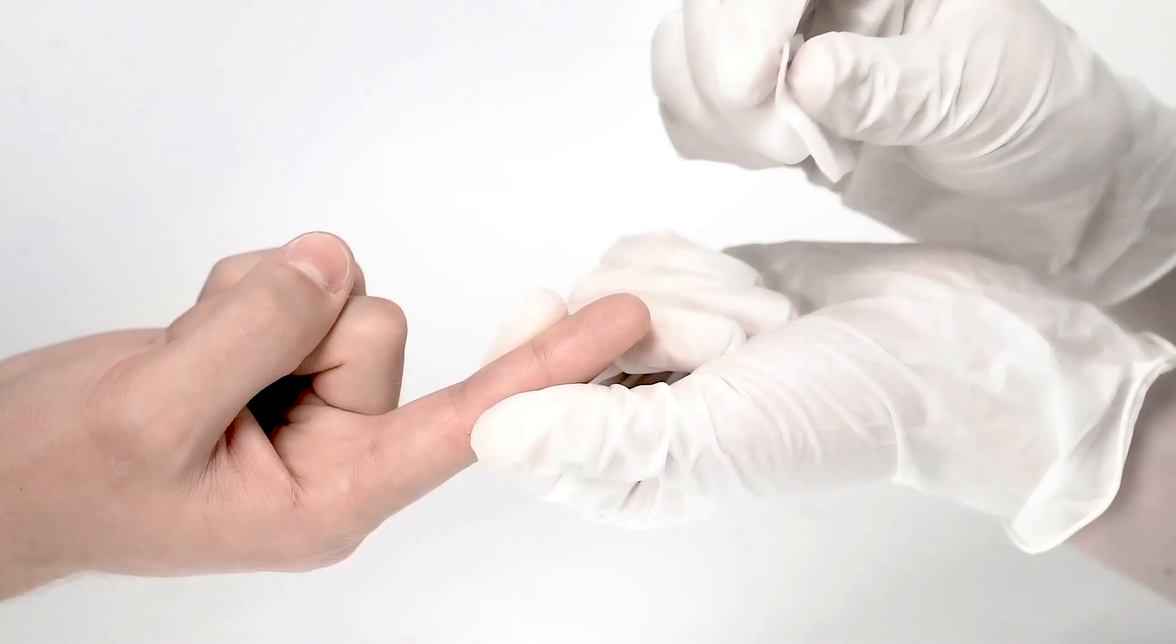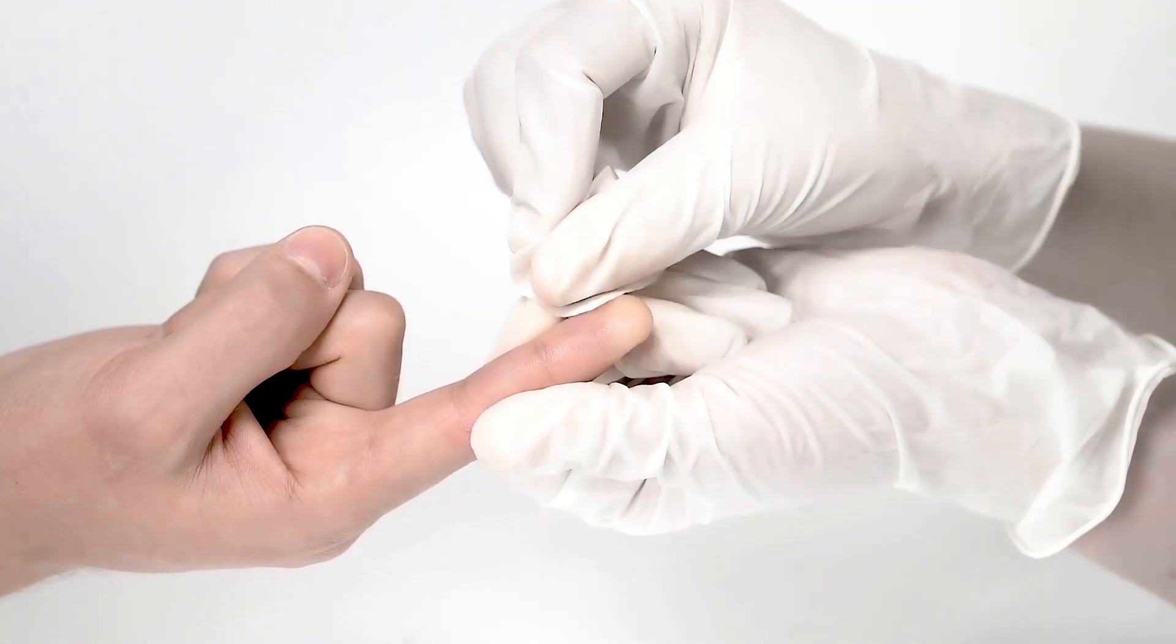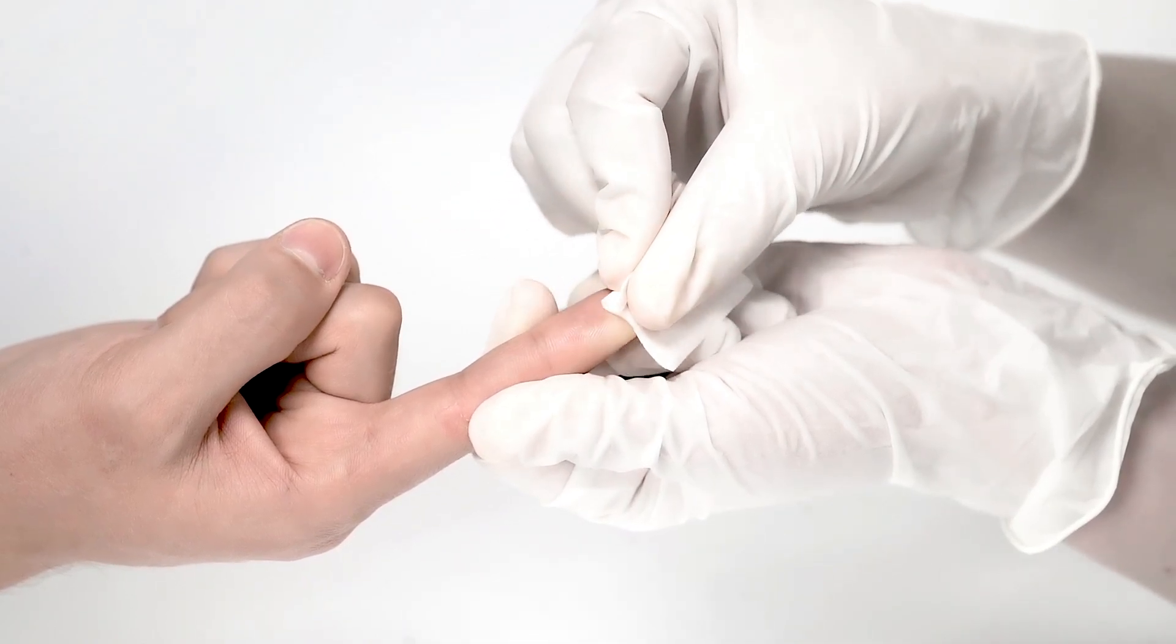After thoroughly washing and drying hands, prepare the finger for the collection of blood by sterilizing the area with the alcohol pad provided.